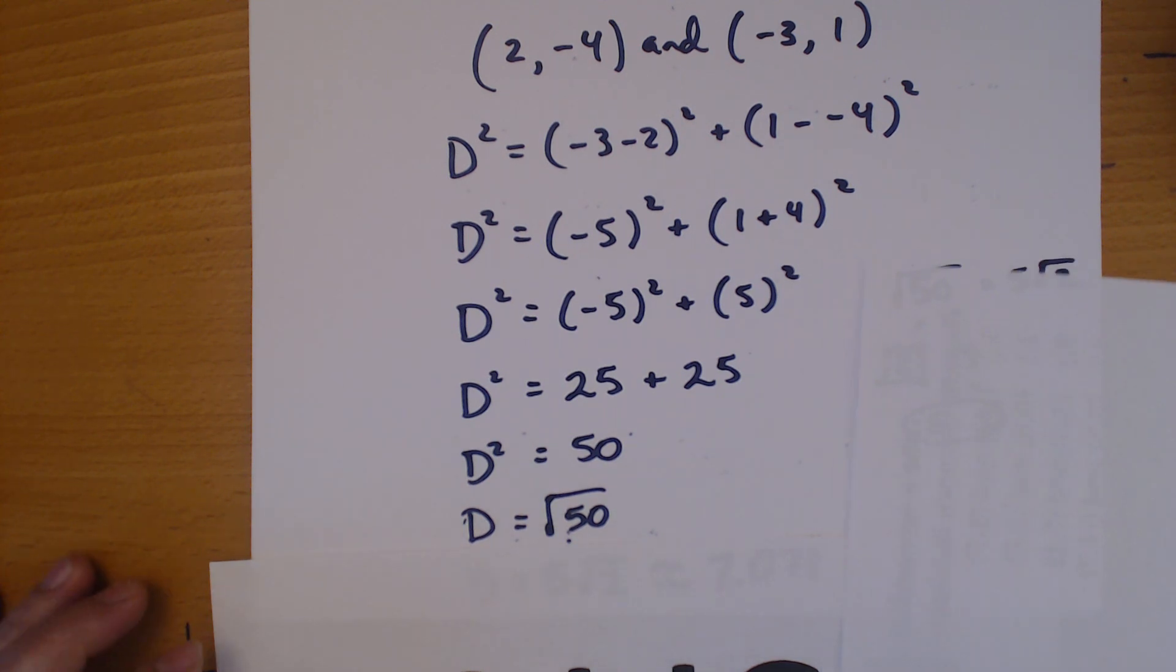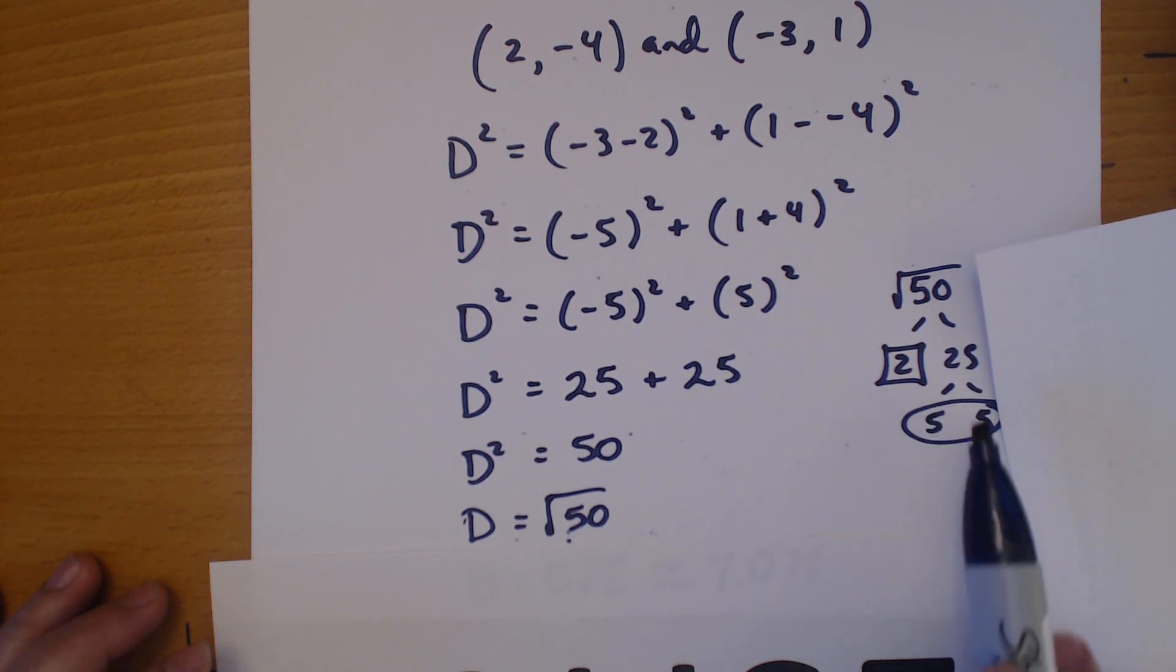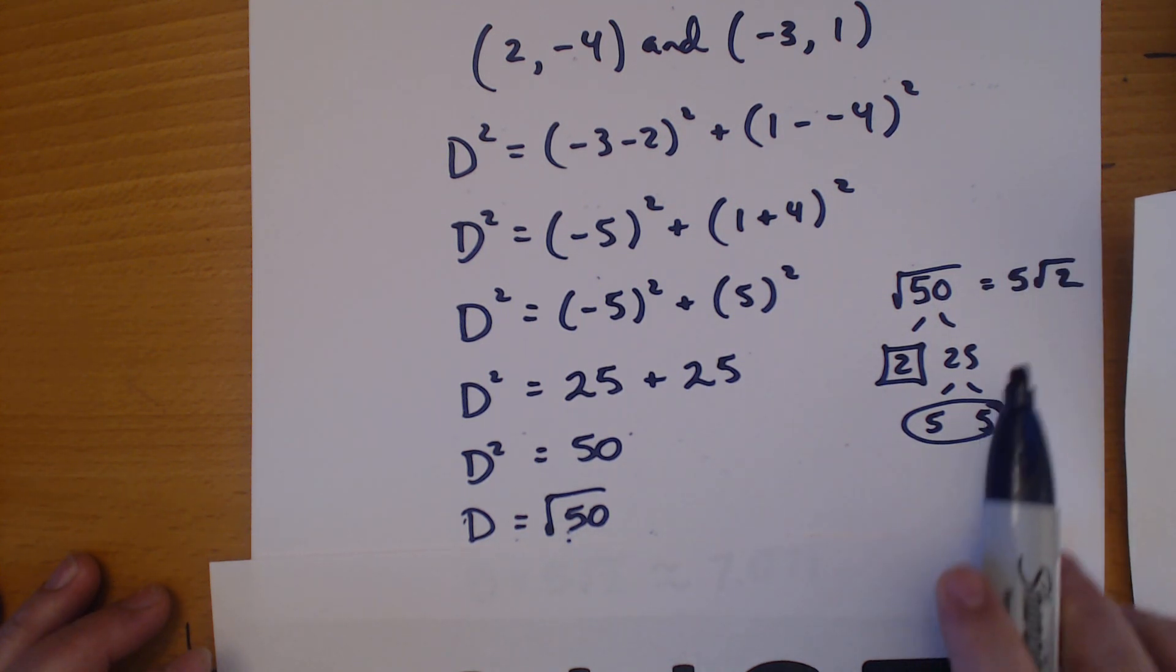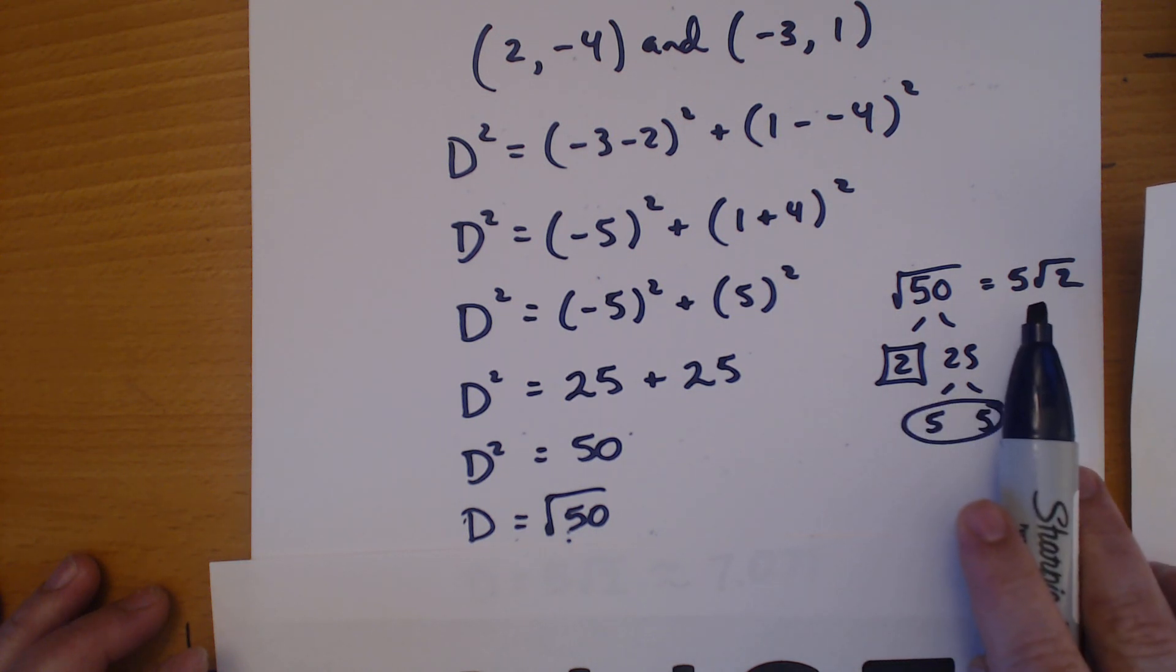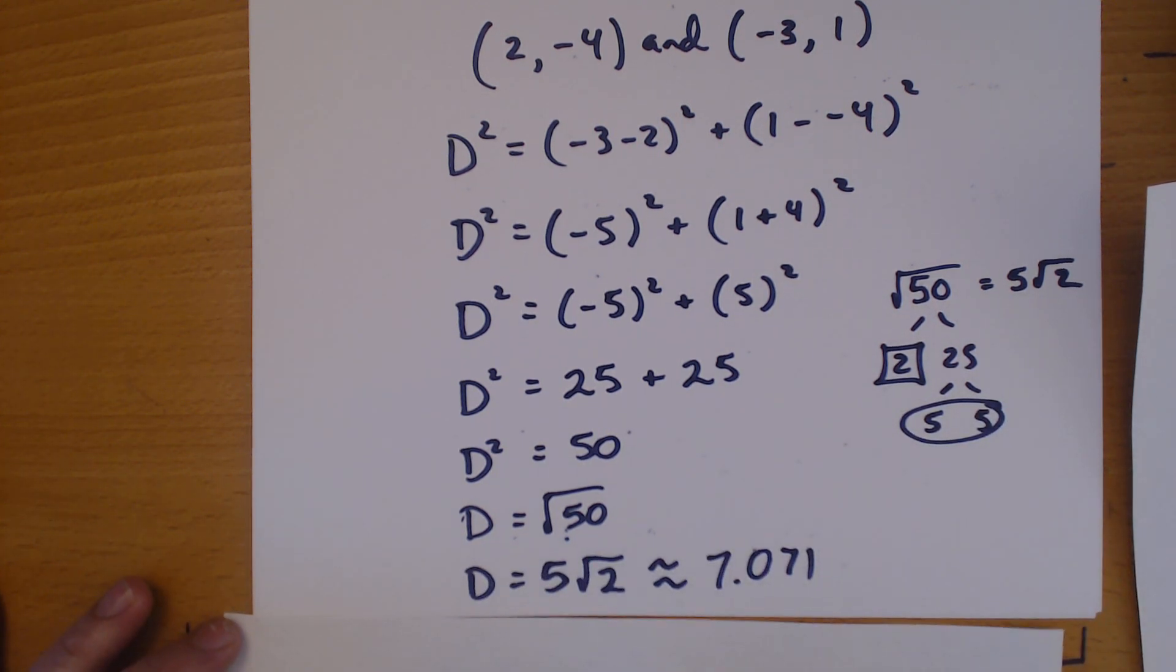And now, to try and break that down, we get a 2 and a pair of 5s. So, remember, you're looking for the pairs. So, a pair of 5s gets to leave. And the 2 has to stay inside. So, your final answer is 5 square roots of 2 or approximately 7.071.